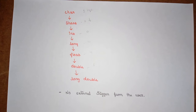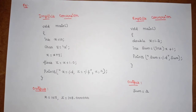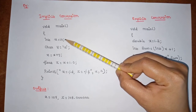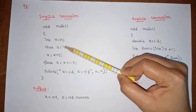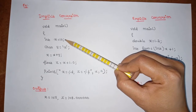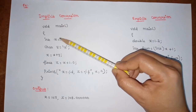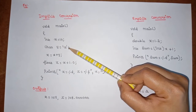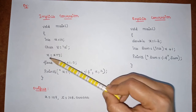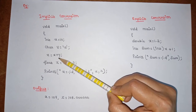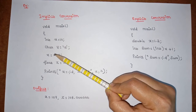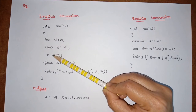Now we will see an example for implicit type conversion. In this program, we have a main function, and inside this main function we have two declaration statements with two different types. In the first declaration statement we have integer type of data, and in the second declaration statement we have character type of data. In the third statement, we have an expression that is performing an addition operation on the operands x and y.